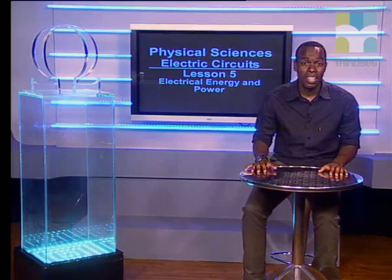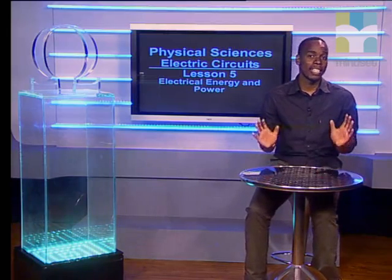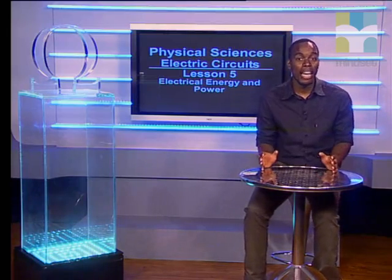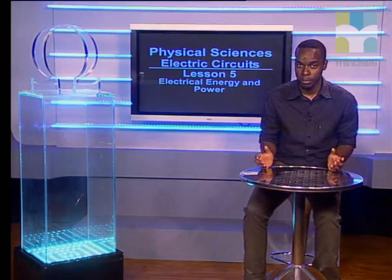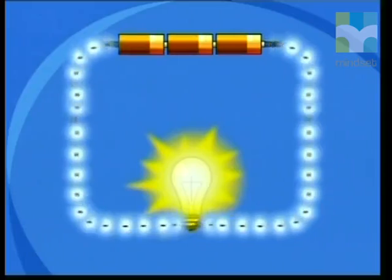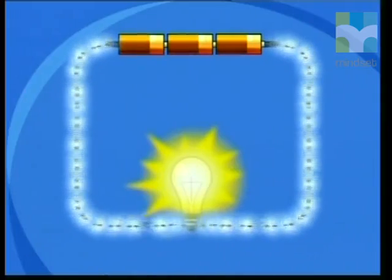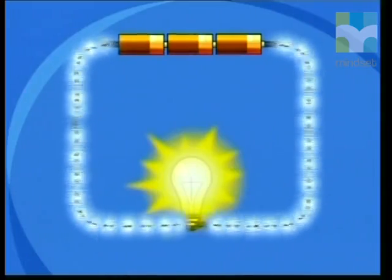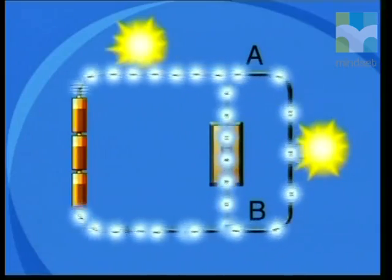Good day grade 11's. In this lesson we will look at electrical energy and power. We know that a circuit contains a battery. The cells in the battery contain chemical potential energy. When the circuit is closed, the chemical potential energy is converted into electric potential energy.